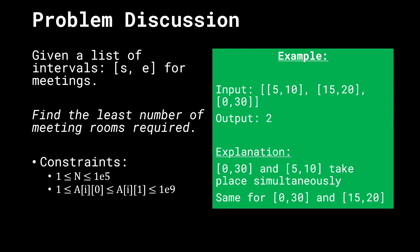The output of this problem is 2, saying that at least two rooms are required to conduct all of these meetings. That's because [0, 30] and [5, 10] are two meetings which intersect — they take place simultaneously — which means we'll need two different rooms. Similarly, [0, 30] and [15, 20] also intersect, so we need at least two rooms.